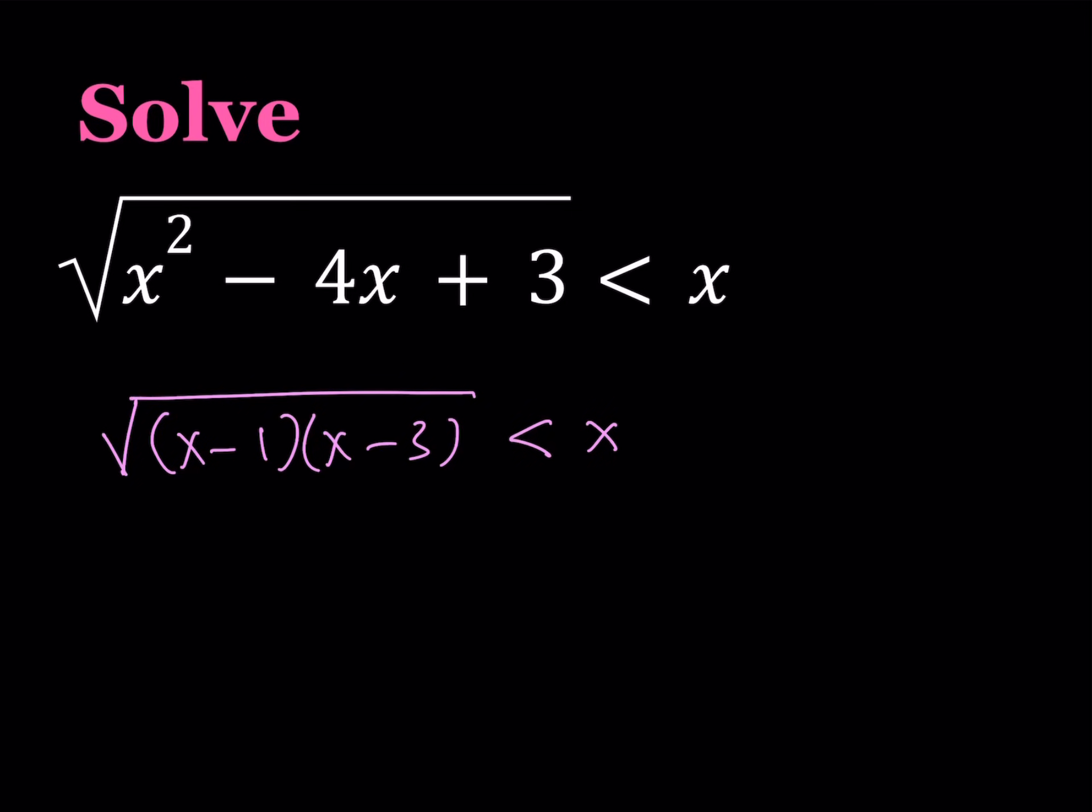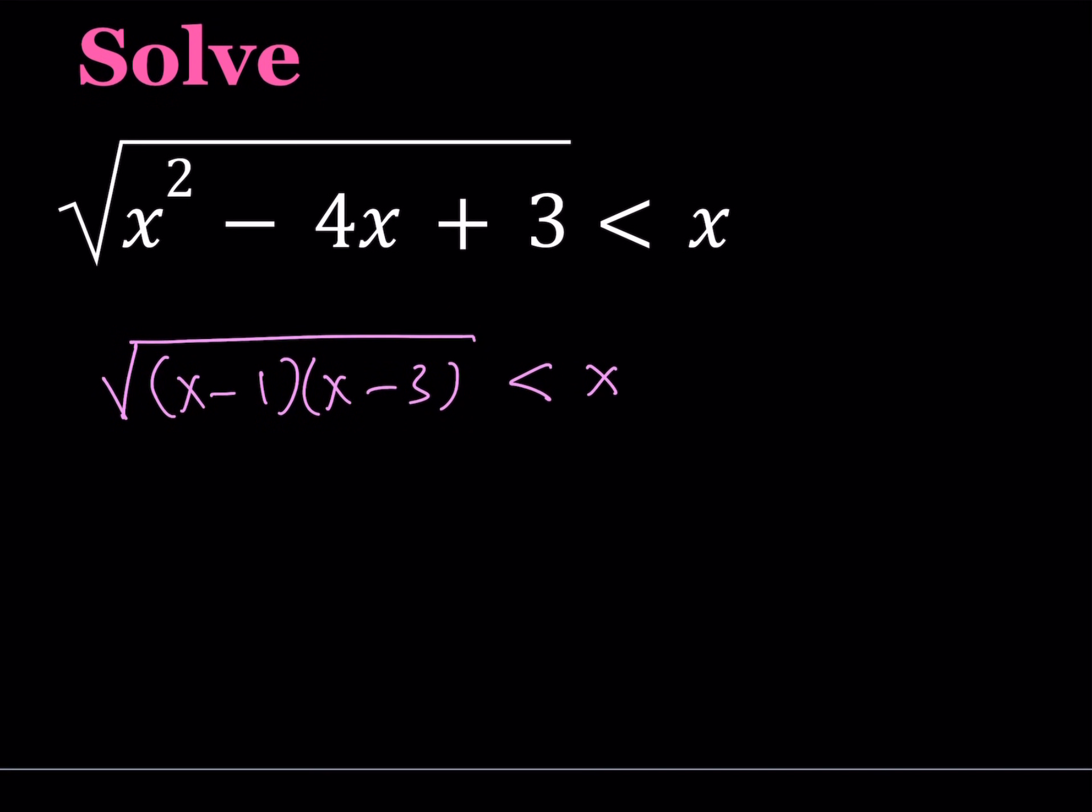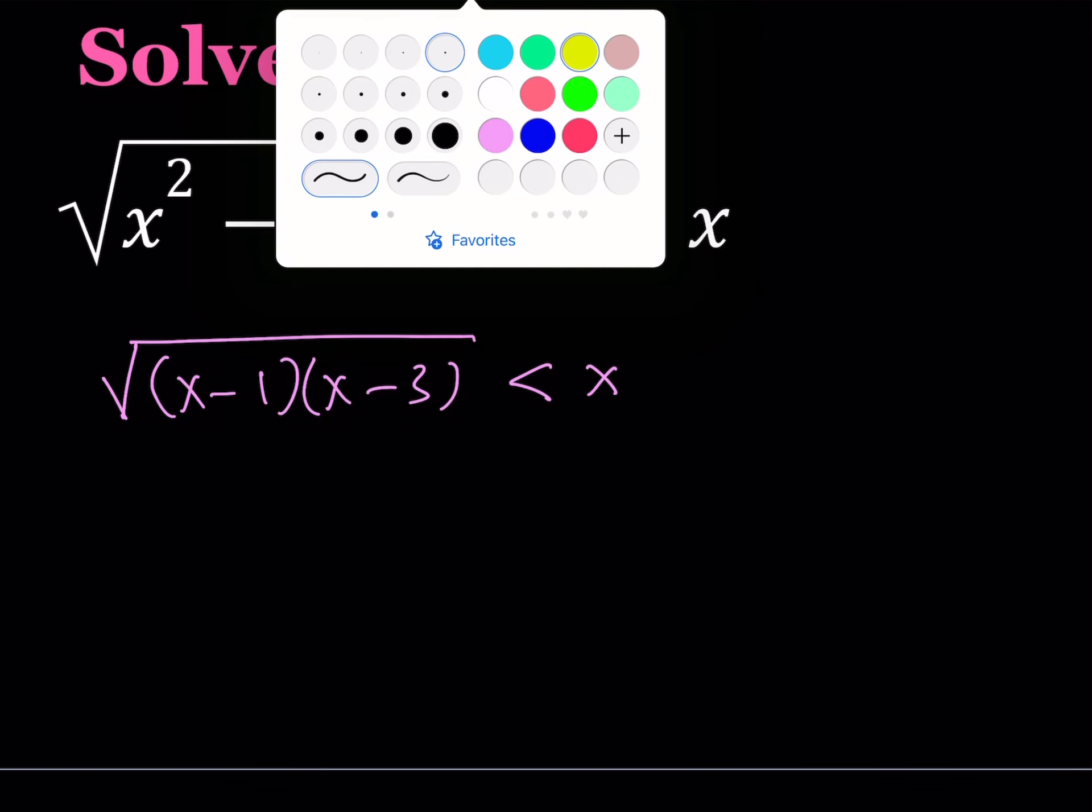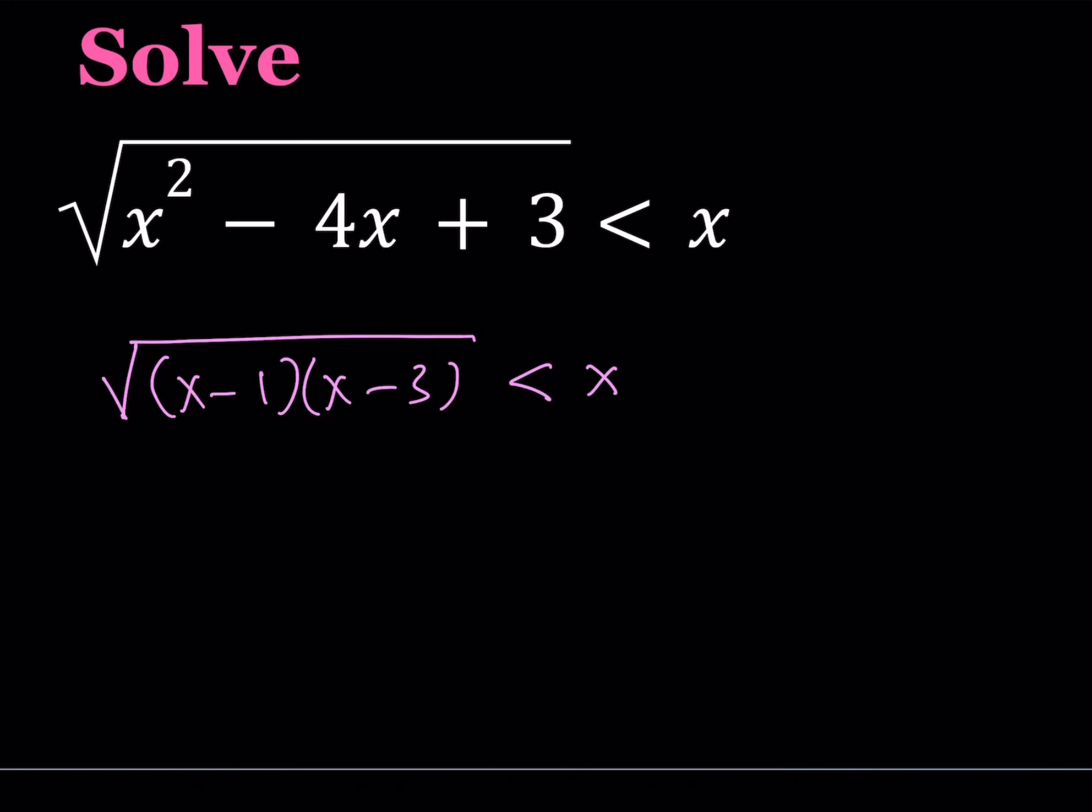Well, one thing I can do is first check the domain like I said earlier. In order for this to be defined for real numbers, it needs to be such that x minus 1 times x minus 3 needs to be greater than or equal to 0. Otherwise, if you have a negative expression under the radical, it is not going to be a real number.